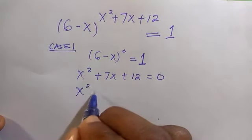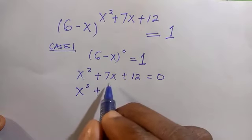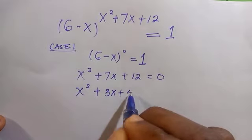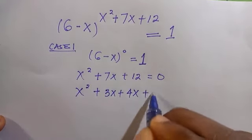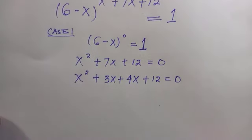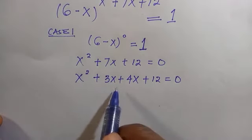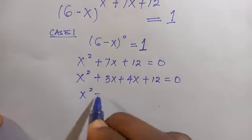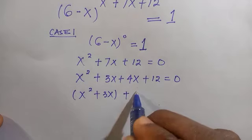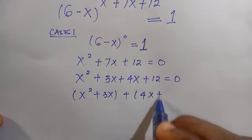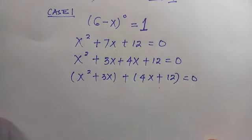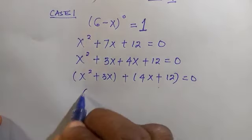We are going to solve this quadratically by the factorization method. The middle term can be written as 3x + 4x, because 3 + 4 = 7 and 3 × 4 = 12, everything equals zero. We group this into two groups: x² + 3x, and then + 4x + 12 equals zero.